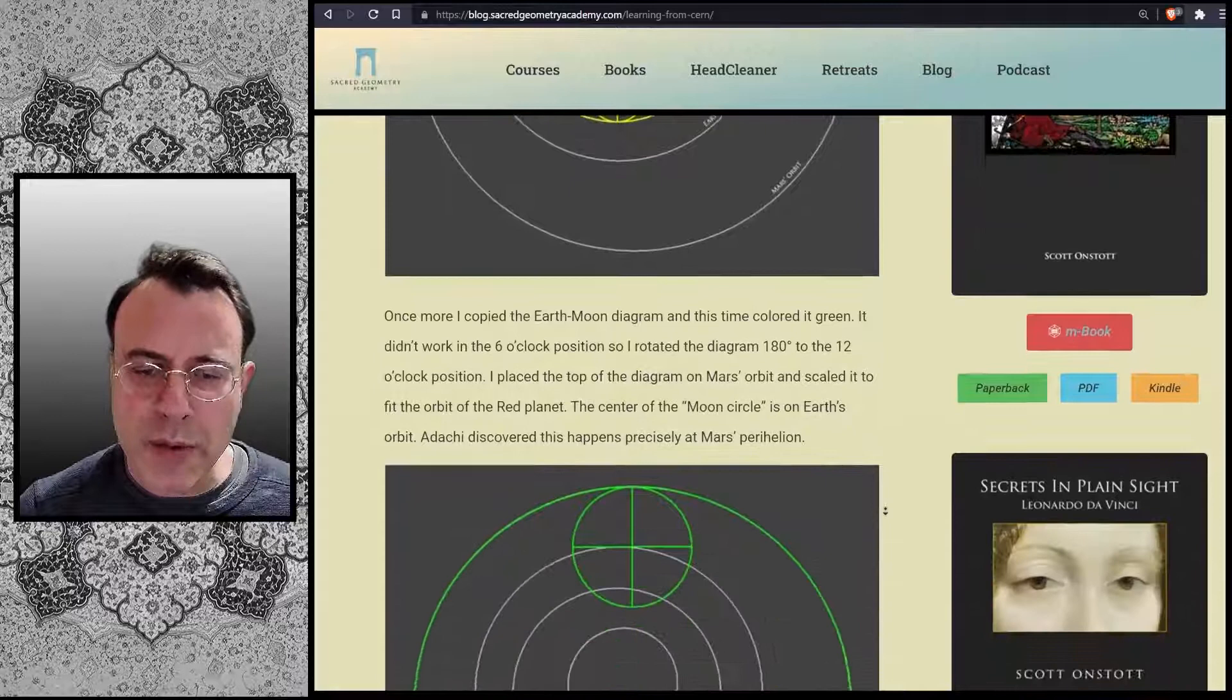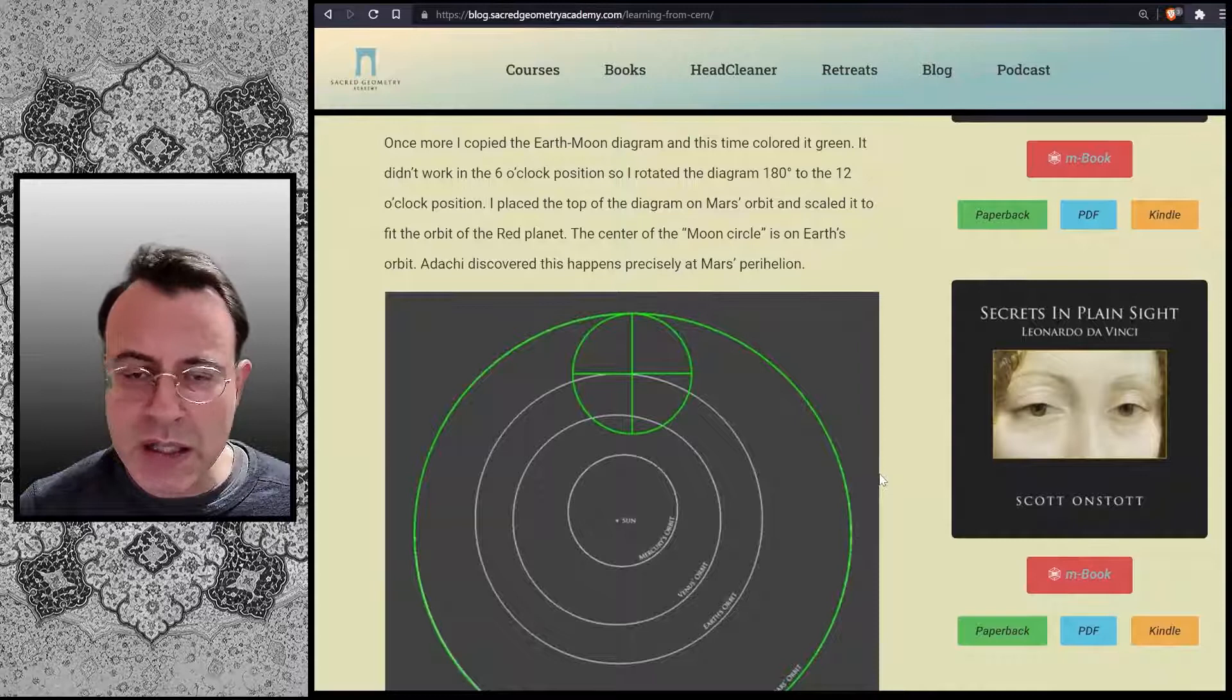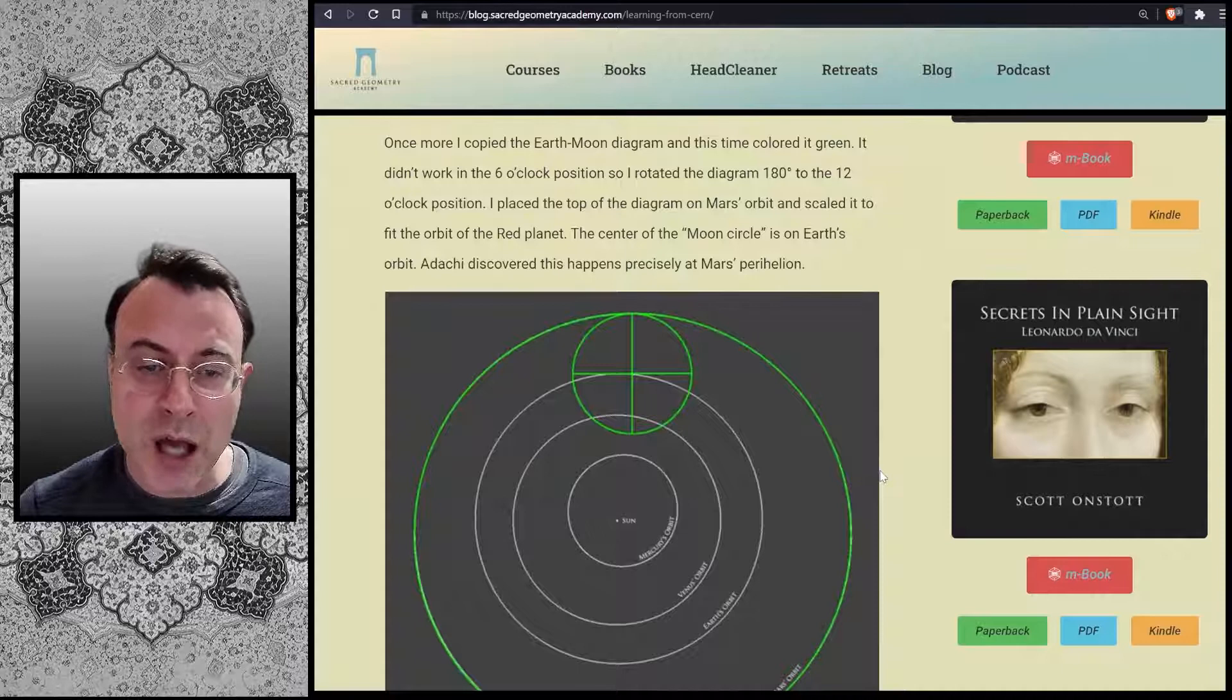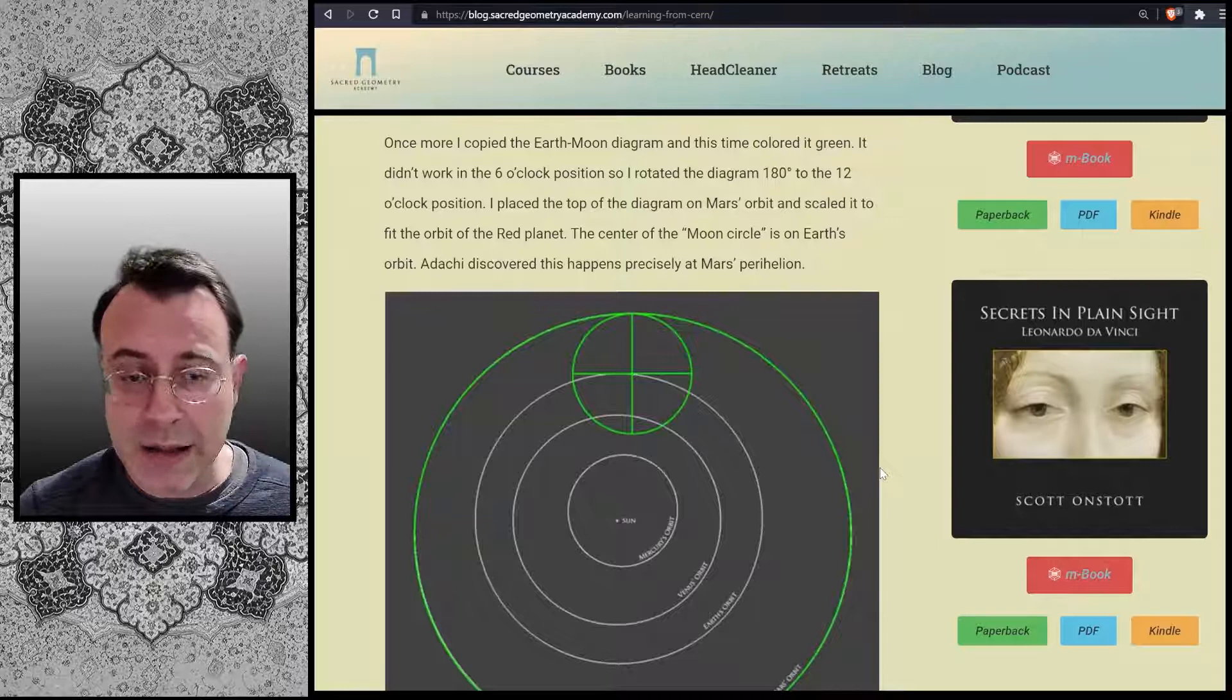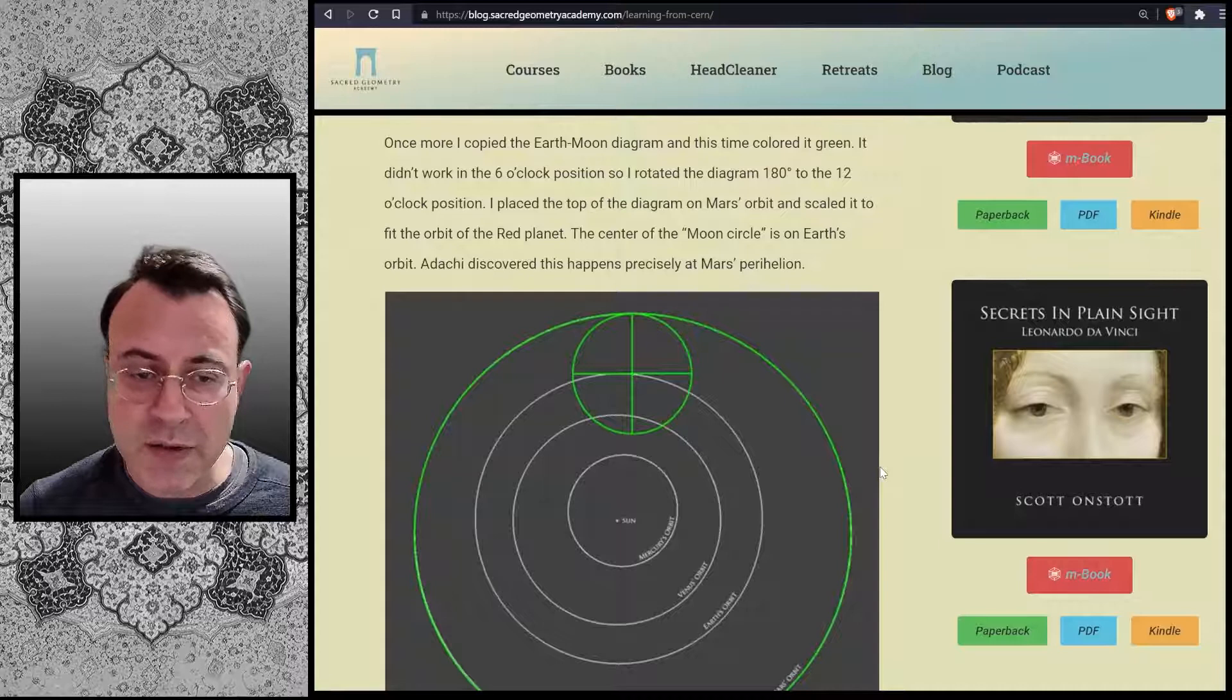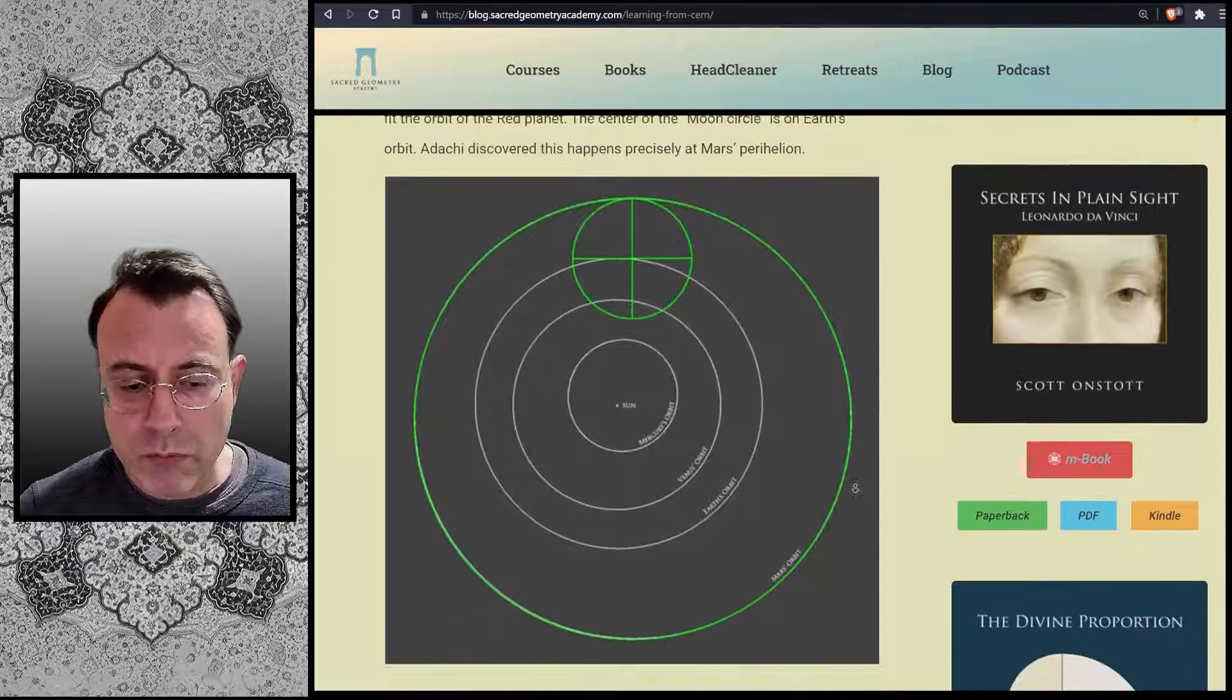Once more, I copied the Earth-Moon diagram and this time colored it green. It didn't work in the 6 o'clock position, so I rotated the diagram 180 degrees to the 12 o'clock position. I placed the top of the diagram on Mars's orbit and scaled it to fit the orbit of the red planet. The center of the moon circle is on Earth's orbit. Adachi discovered this happens precisely at Mars's perihelion.